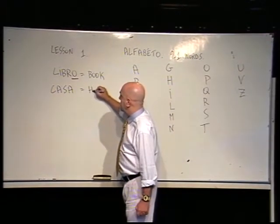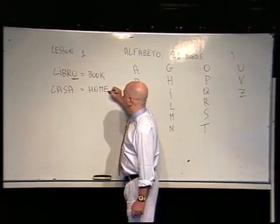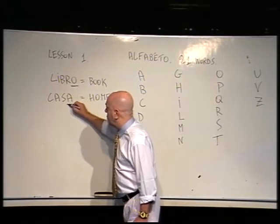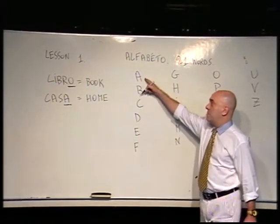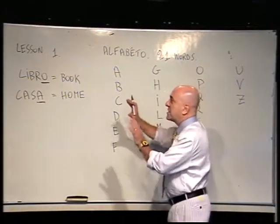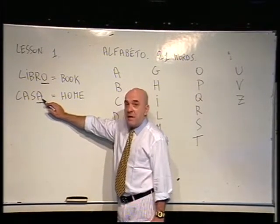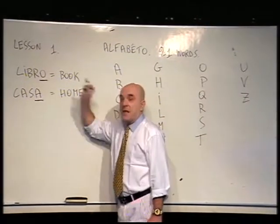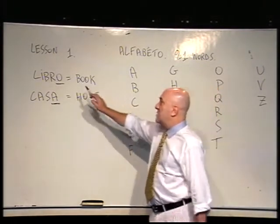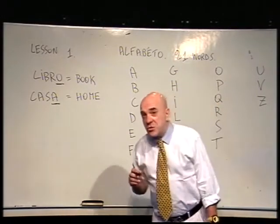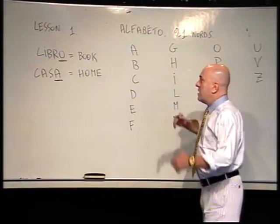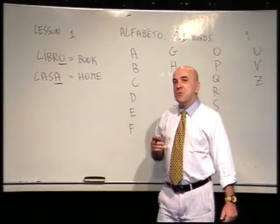Imagine you open the dictionary and you want to find out how to say 'house'. On the dictionary you will find this word: casa. Casa means home. As you notice, the last letter is not O but is A. So, again, 99% of the time, if the last letter is A, the Italian name that you are going to use belongs to the feminine gender. If the last letter is O, the gender is masculine. This is the most common rule — 99% of the time it will be like that.